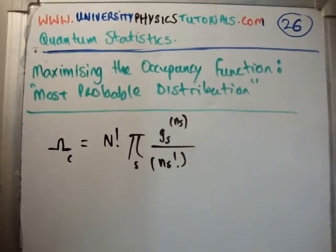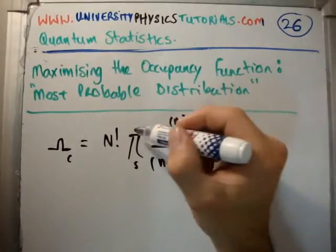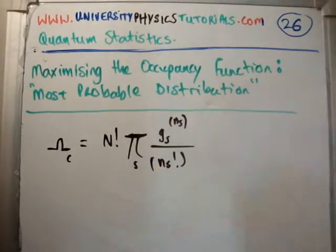Now, I'm not going to go into that. That's what it is at the moment isn't really important. But this was the occupancy function. Think about it. If you want to find out the most probable distribution, what we're trying to do is maximize the occupancy function.